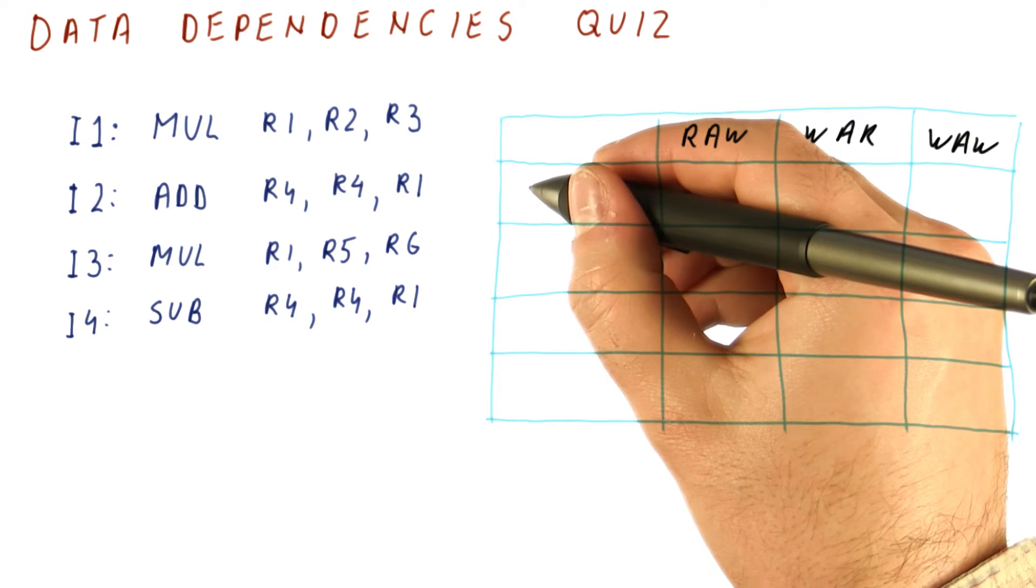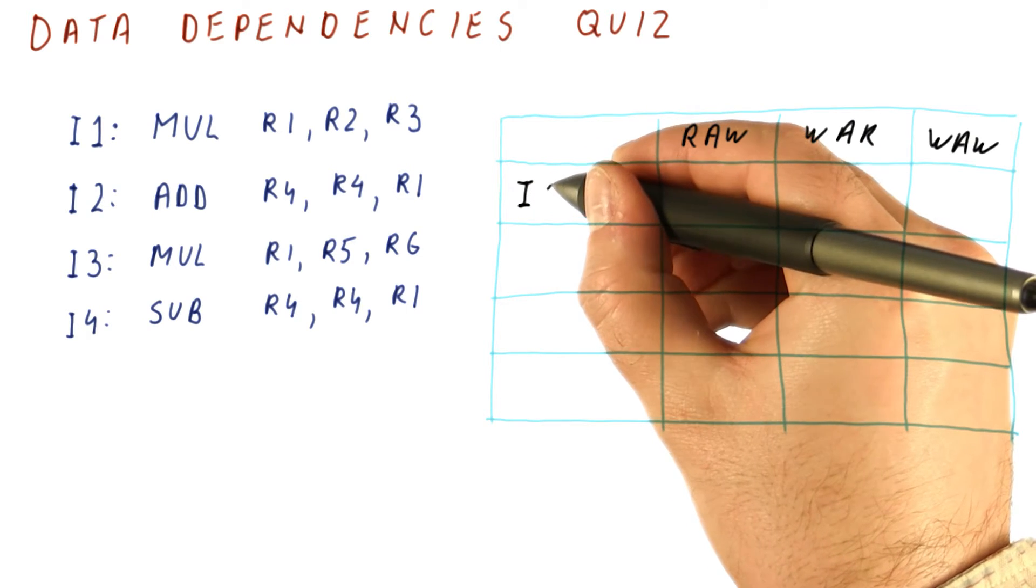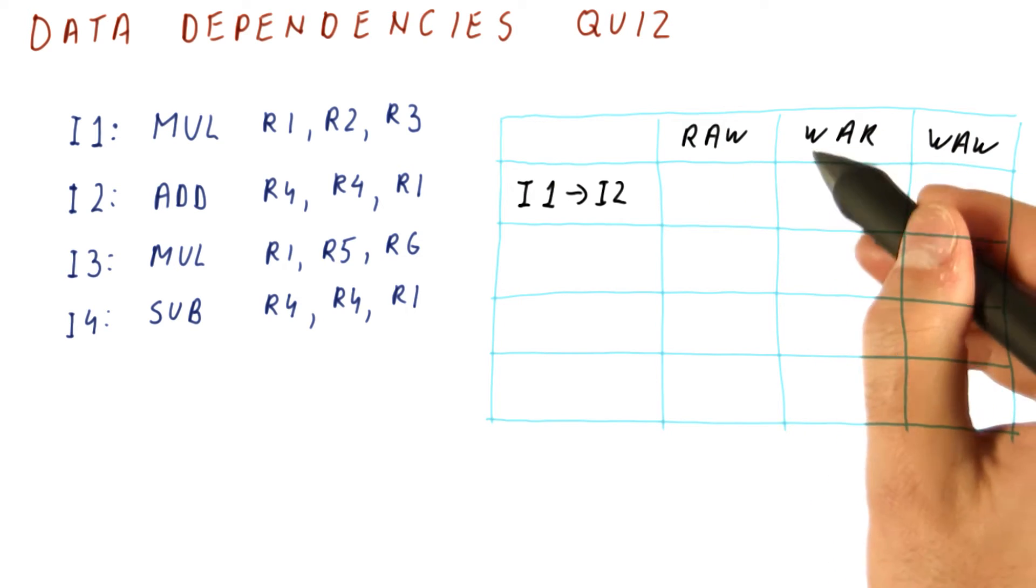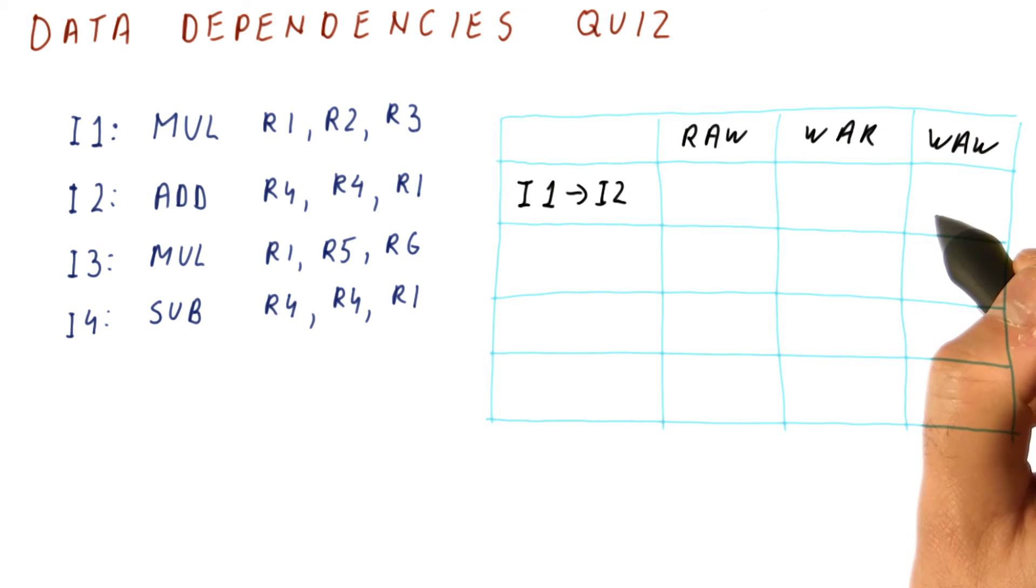You need to indicate whether there are any dependencies between instruction I1 and I2 for each of these three types of dependencies. Is there such a dependence?